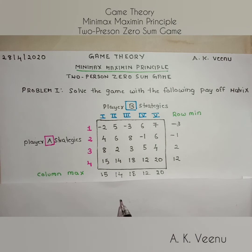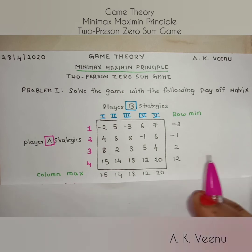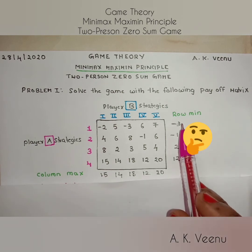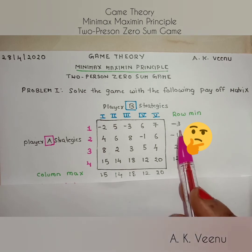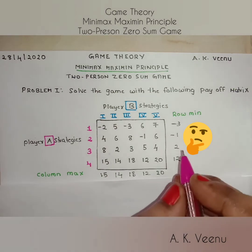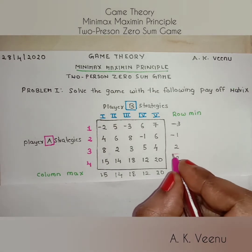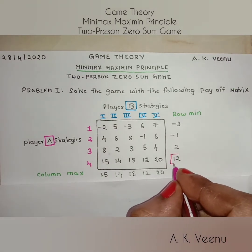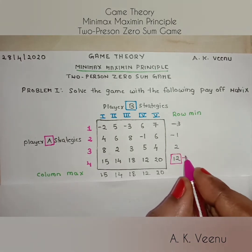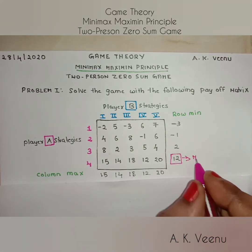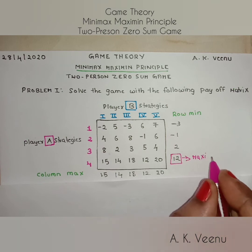Now let's revisit the row minimums. Here we have to ask an important question: which is the greatest number of them all? The answer is 12. So let's demarcate it and call it the maximin.